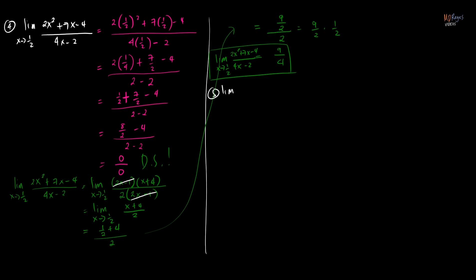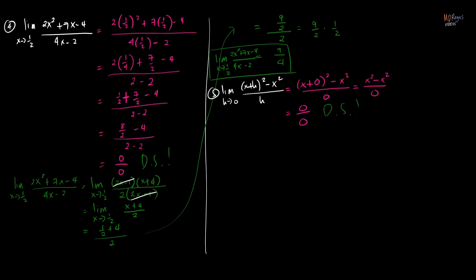Another example: the limit of [(x + h)² - x²]/h as h approaches 0. Here we substitute 0 for h — not for x — because h is the variable approaching 0. Substituting gives us (x + 0)² - x² over 0, which is x² - x² over 0, or zero over zero — the indeterminate form again. So we have to do something with the function.